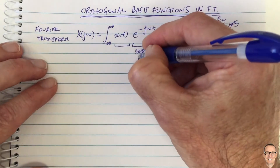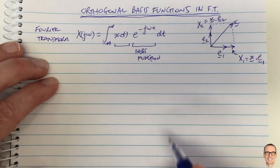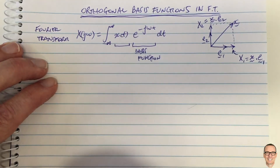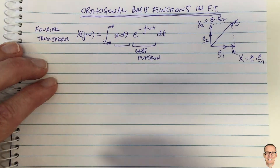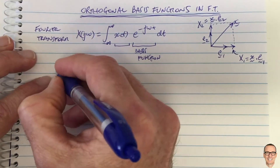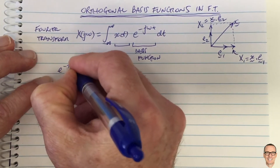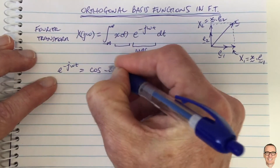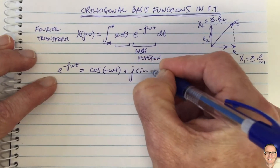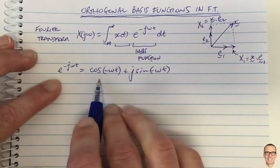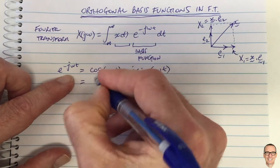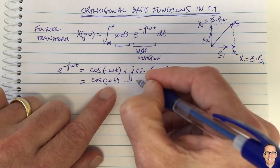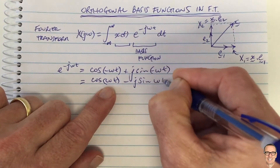I like to think of waveforms — it helps me to visualize things. Let's rewrite this in its form with cosines and sines because they're easier to think of in terms of functions. So e to the minus j omega t equals cos of minus omega t plus j sine of minus omega t. Because cosine is an even function, this equals cos of omega t, and because sine is an odd function, this equals minus j sine of omega t.